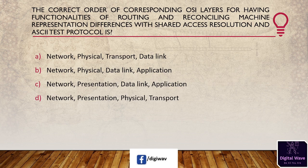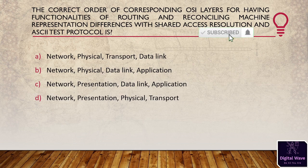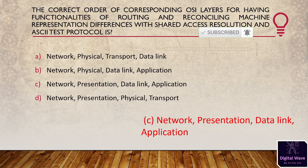Next question: what is the correct order of OSI layers corresponding to the functionalities of routing, reconciling machine representation differences, shared access resolution, and ASCII text protocol? Options: (A) network, physical, transport, data link; (B) network, physical, data link, application; (C) network, presentation, data link, application; (D) network, presentation, physical, transport. The answer is C — network, presentation, data link, application.